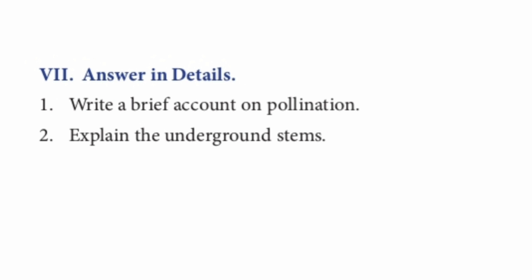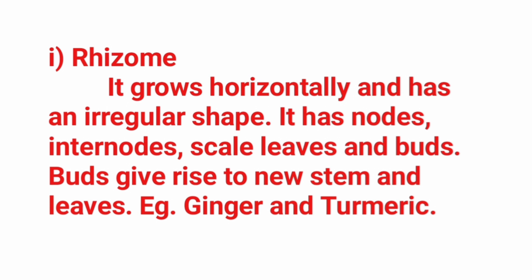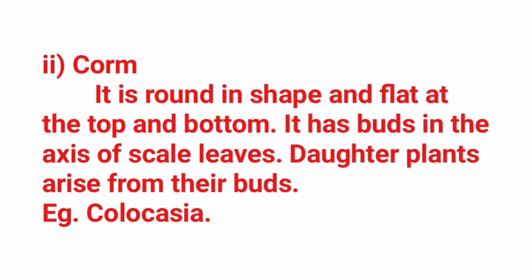Question 2: Explain the underground stems. Underground stems are stems that grow under the ground to store food; they swell and become thick. The four types of underground stems are rhizome, corm, tuber, and bulb. 1. Rhizome: it grows horizontally and has an irregular shape. It has nodes, internodes, scale leaves and buds. Buds give rise to new stem and leaves. Example: ginger and turmeric.